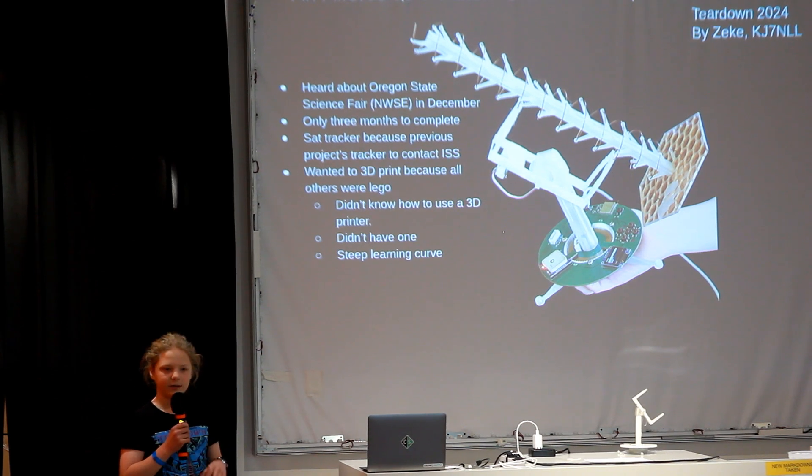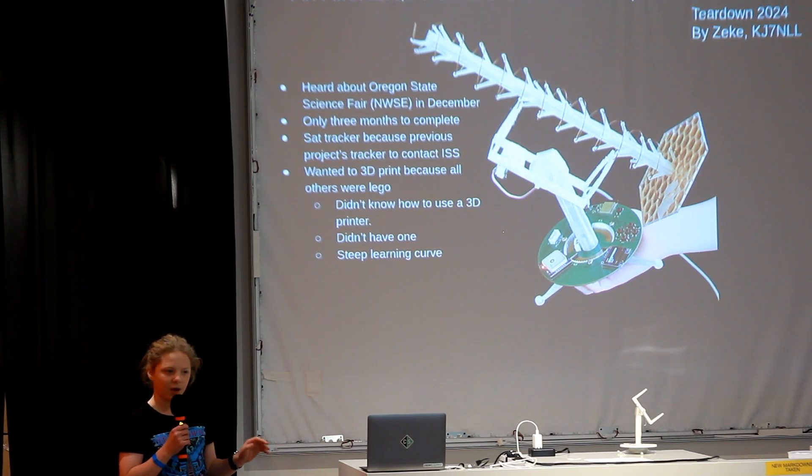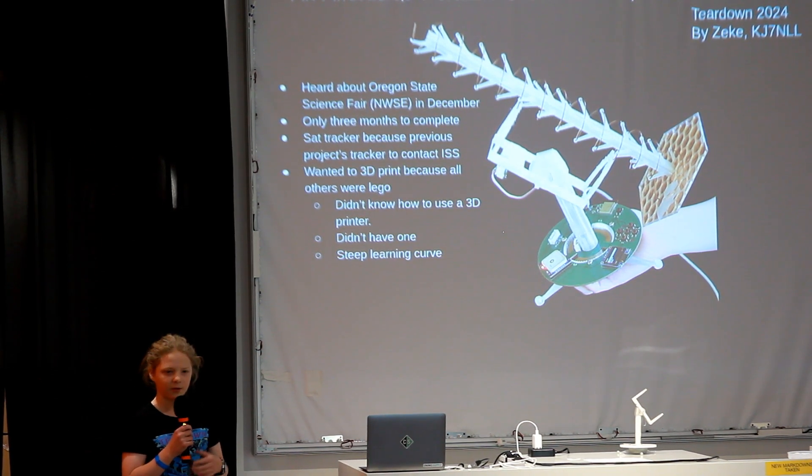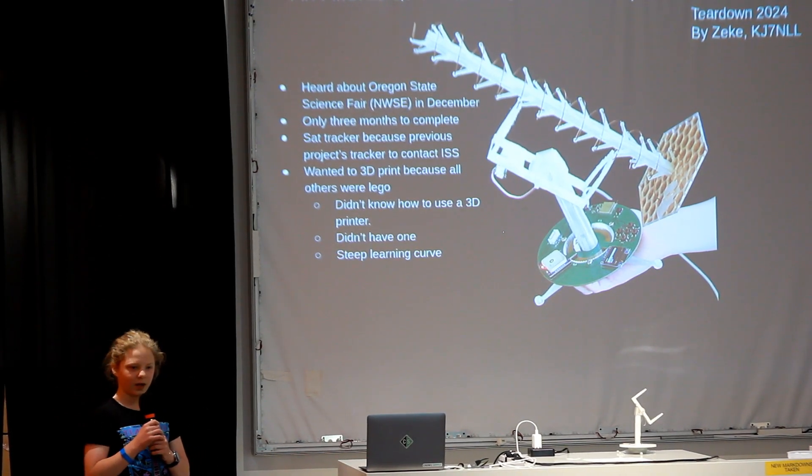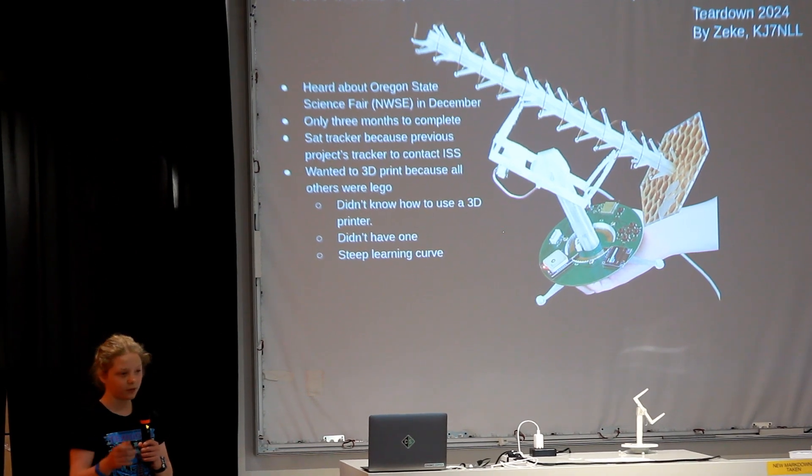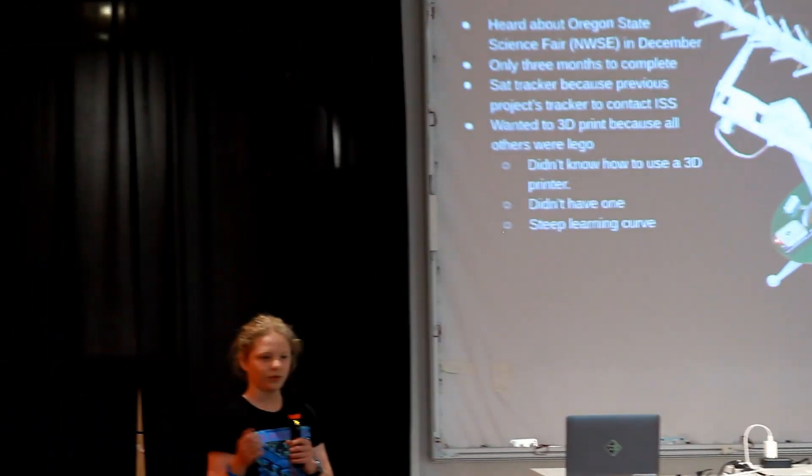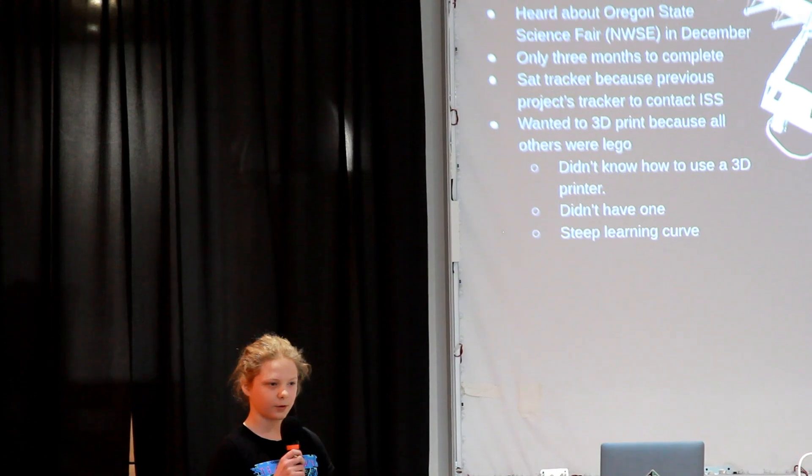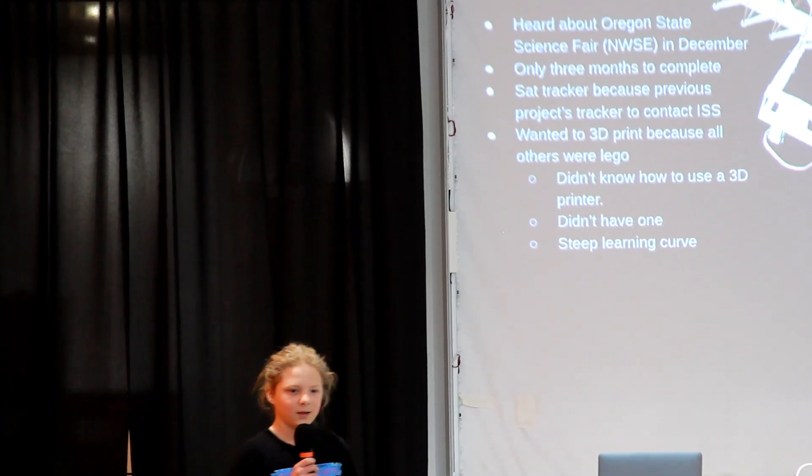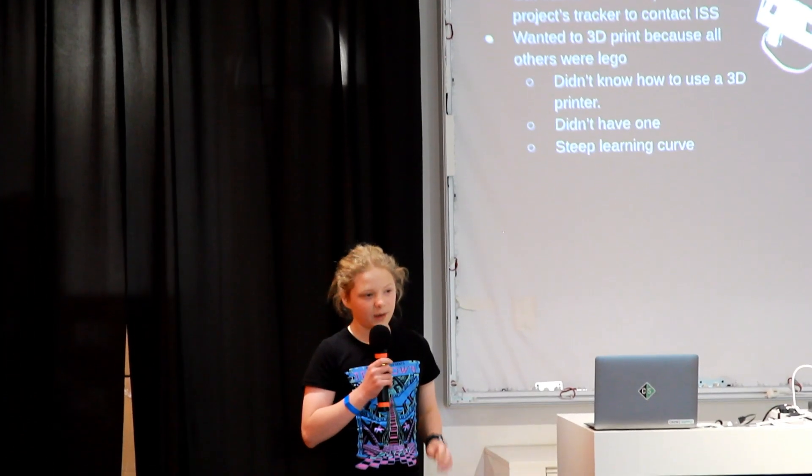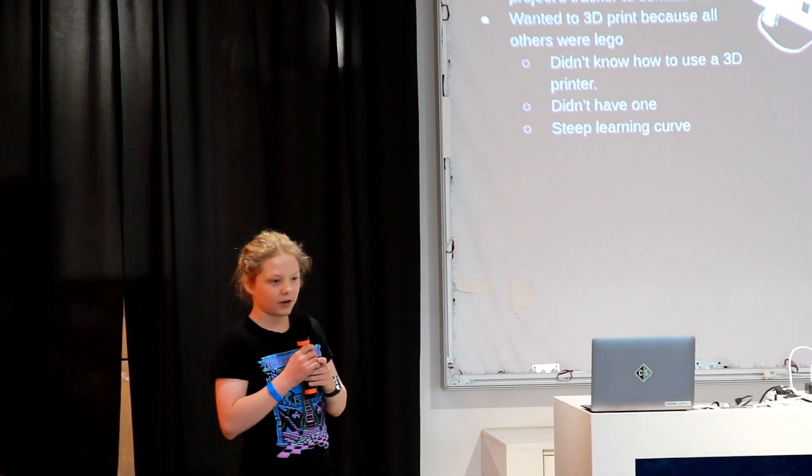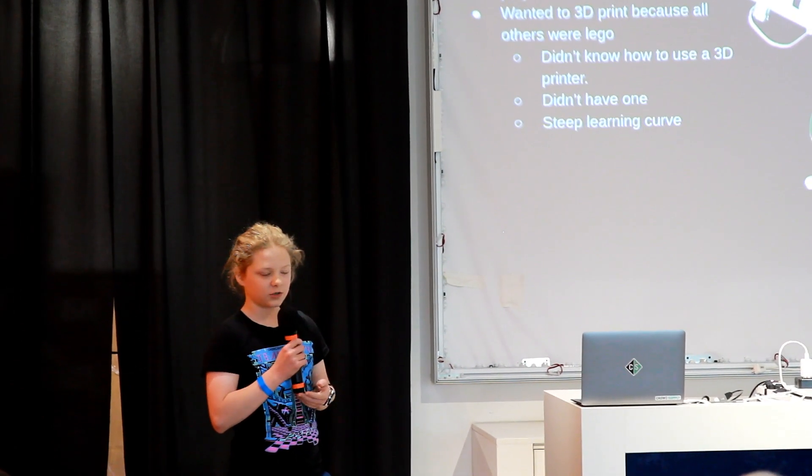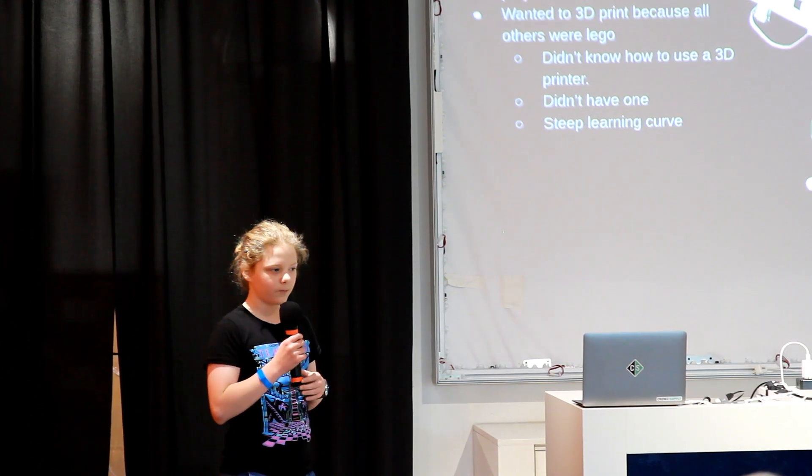Okay, so why 3D-printed? Well, all of my other desktop-sized satellite trackers were made out of Legos, so I wanted to try something new. But the problem was, I did not have a 3D printer, and I did not know how to use one. So, I bought myself a 3D printer, and using it had a steep learning curve, but I was able to make this a fully functional desktop satellite tracker that can track satellites, planets, and stars.